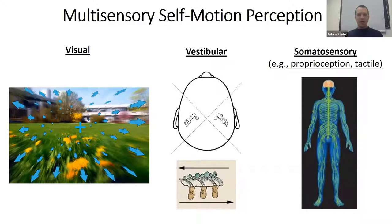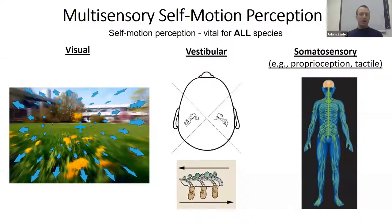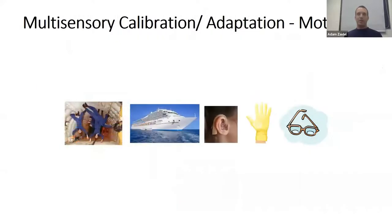We also use somatosensory, proprioception, and tactile senses. In order to know where we are in space, we integrate information from all these different senses. Self-motion perception is vital for all species — humans and animals — we all need to know we're moving in space in order to interact with the environment. Within self-motion perception, a field that really interests me is multi-sensory calibration and adaptation: how do our senses adapt to the environment?